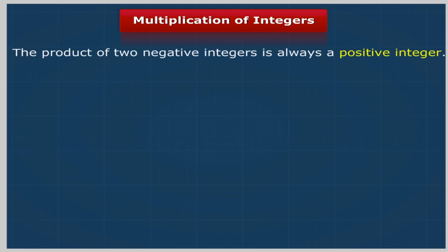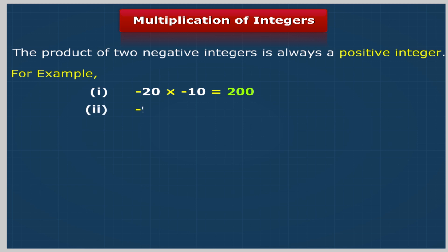The product of two negative integers is always a positive integer. For example, (−20) × (−10) = 200. (−90) × (−5) = 450.